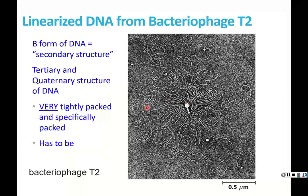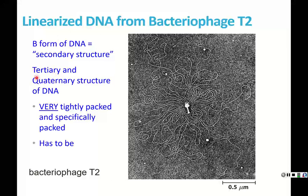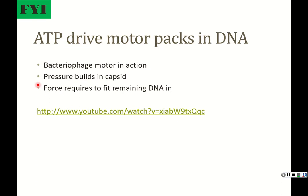DNA has a secondary structure — we typically think of that as the B form of DNA. There's also tertiary and quaternary structures of DNA, and all of these structural organizations lead it to be very tightly packed. A link here will show exactly how DNA fits into a virus using an ATP motor that packs the DNA in very tightly. All of these links will be in the description below.